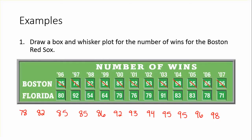We need to find our minimum and maximum values for our box and whisker plot. We'll also find the median here. The median falls between 92 and 93, so the median is 92.5 when we add the two numbers and divide by two. The lower quartile falls between 85 and 85, so the lower quartile is 85.